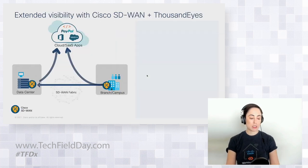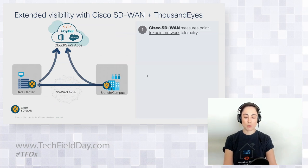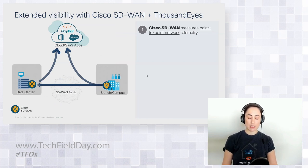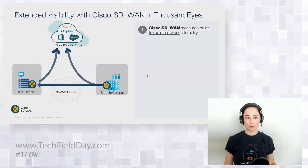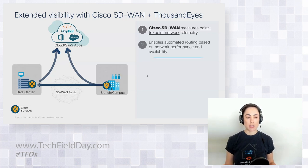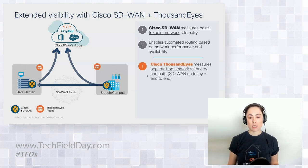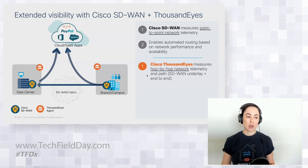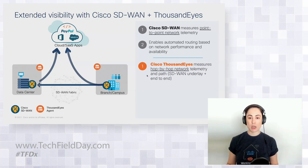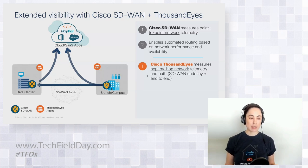With Cisco SD-WAN, you get measurements of network telemetry point to point — between SD-WAN endpoints or between an SD-WAN endpoint and an application — and you can see metrics like packet loss, latency, and jitter. That's valuable for path selection. But what it doesn't enable is understanding the specific network path: each individual hop, not only in the SD-WAN underlay, but also beyond the SD-WAN fabric into transit providers, ISPs, as well as cloud and SaaS provider networks.